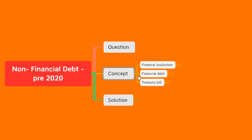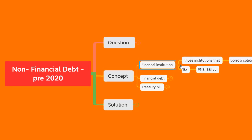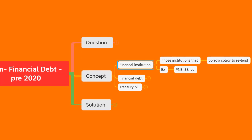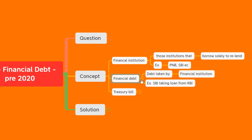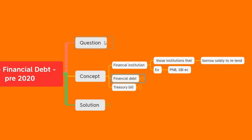Before understanding non-financial debt, we need to understand what financial institutions are. Financial institutions are those institutions that borrow solely to relend the money. For example, banks like Punjab National Bank or State Bank of India — when they don't have enough money, they borrow from other banks to give loans to people or companies. This is their business model. The debt taken by such institutions is called financial debt. For example, if SBI takes a loan from RBI, that is called financial debt.